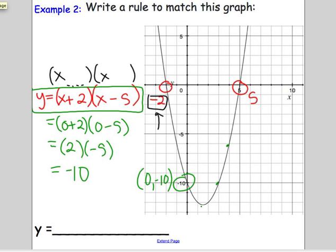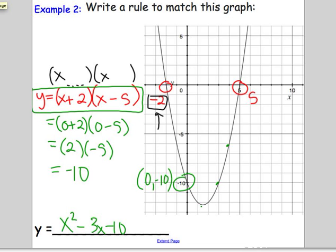Once again, you could multiply that out. You could take a moment to try that here. If you multiply it out, you get x squared minus 3x minus 10. So we found the rule by finding the x-intercepts first, and then we have to check a point. So let's summarize that here.